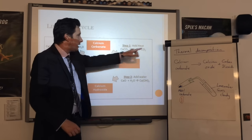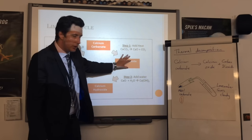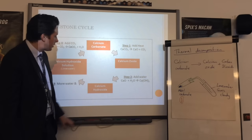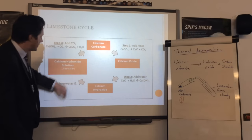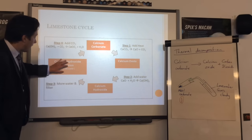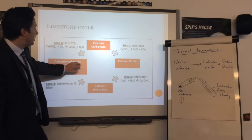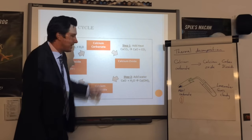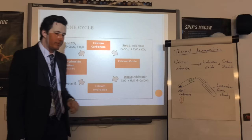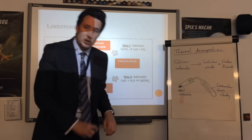To summarize the limestone cycle: calcium carbonate is heated - thermal decomposition - to make calcium oxide. Add water to calcium oxide to get calcium hydroxide (slaked lime). Add more water and filter to get lime water (calcium hydroxide solution). Add carbon dioxide to lime water and it returns to calcium carbonate, completing the cycle.